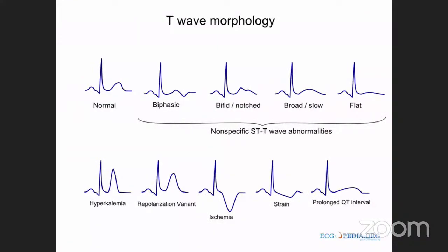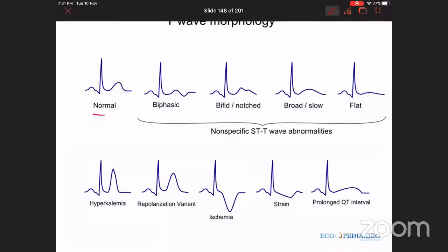Now let us discuss the T wave — late repolarization. T waves can be normal, biphasic, bifid, or broad. Specific T wave abnormalities to watch for are: sharp, peaked T waves of hyperkalemia; deep symmetric T wave inversion of ischemic heart disease; the strain pattern; and a very slow peak and fall suggestive of a prolonged QT interval.